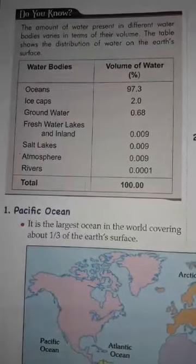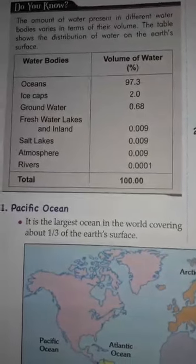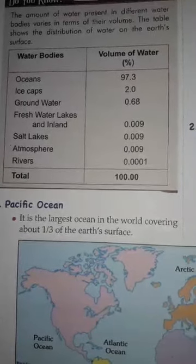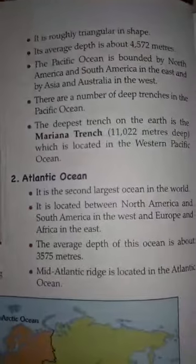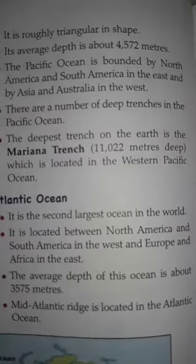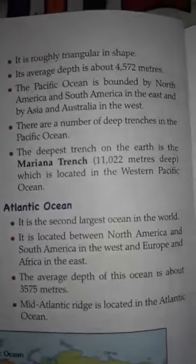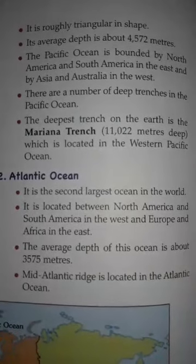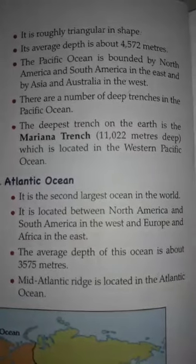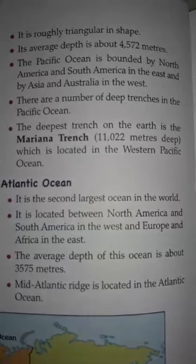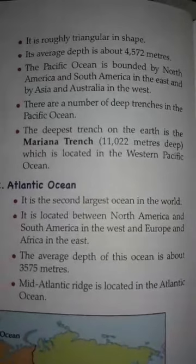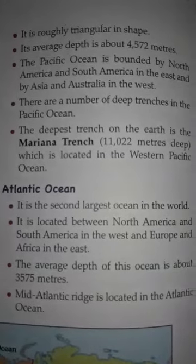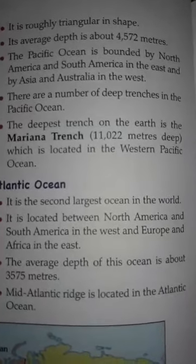First and the largest ocean is the Pacific Ocean. It is the largest and deepest ocean, covering one third of the globe. Its average depth is 4,572 meters. Its basin contains high and abrupt ridges, deep trenches, volcanic mountains, and other features. Pacific Ocean has a string of volcanoes along the coastal margins of the continent. The deepest trench on the earth is the Mariana Trench, which is 11,022 meters deep, located in the western Pacific Ocean.